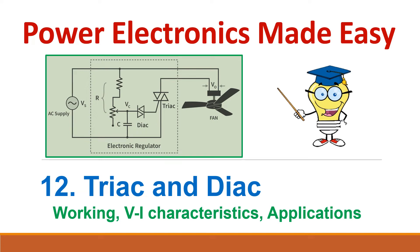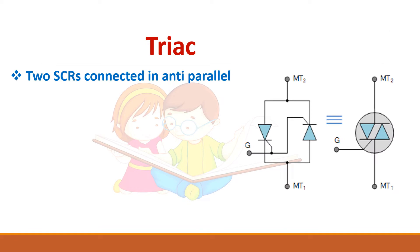Let's see about TRIAC and DIAC. So what is a TRIAC? TRIAC is equivalent to two SCRs in anti-parallel. We can see this is an SCR connected in this direction and this is another SCR connected in the opposite direction.